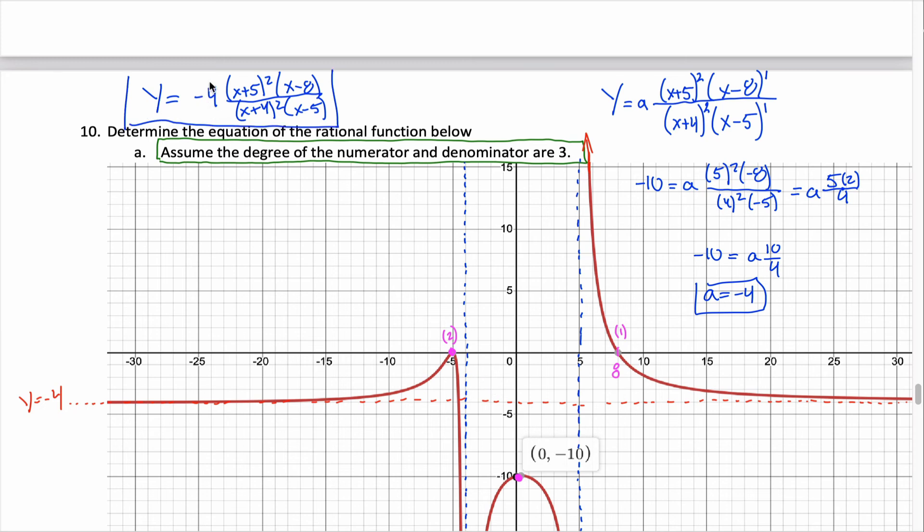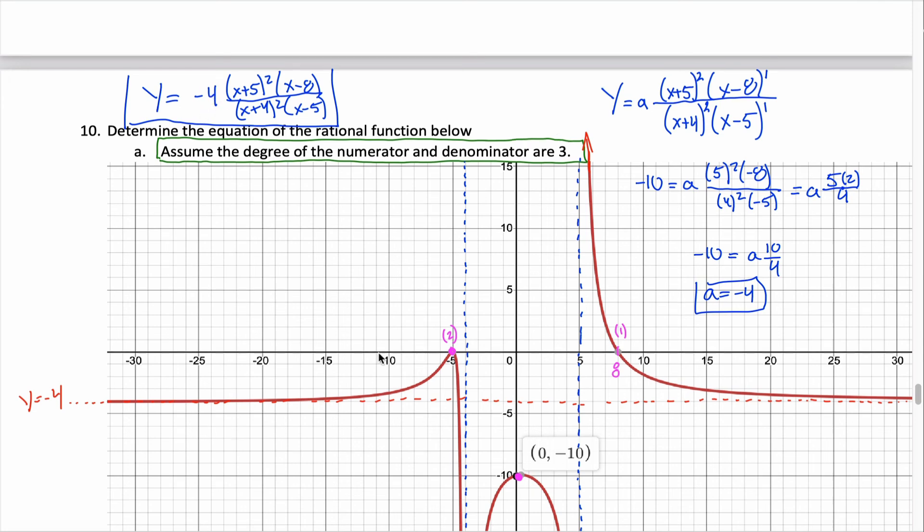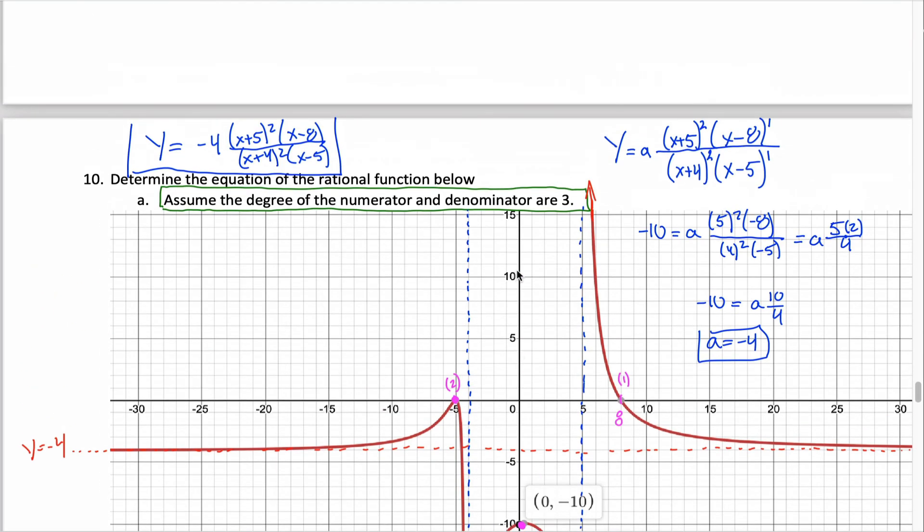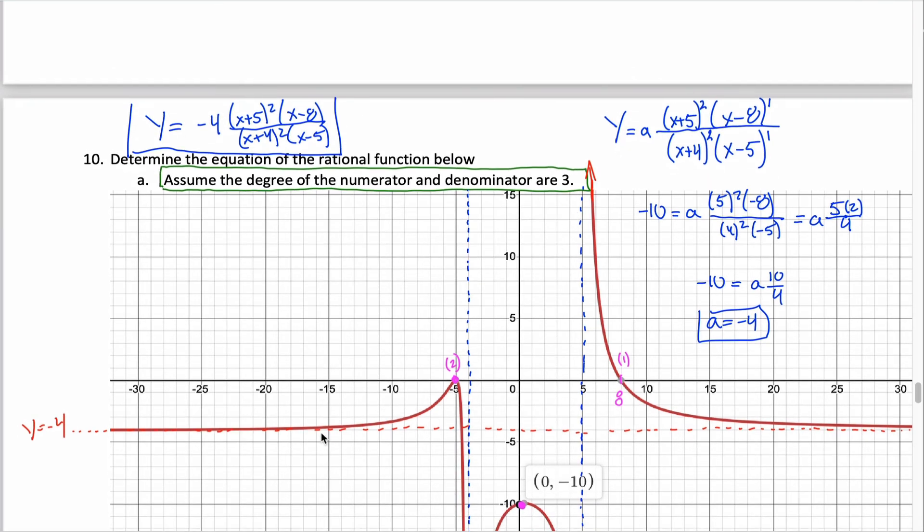It's worth pointing out that we could have determined this negative 4 without ever looking at this y-intercept by noticing that because the numerator and the denominator both have degree 3, we're in what I called case 3 of the end behavior. And case 3 for the end behavior tells us we have a horizontal asymptote at the quotient of the leading coefficients. So the quotient of the leading coefficients must be equal to negative 4. So I have a negative 4 on top and a 1 down on the bottom.